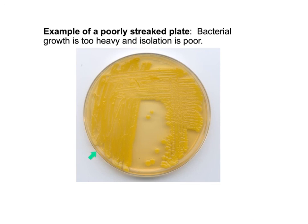This right here would be an example of a poorly streaked plate because the bacteria growth is so heavy that we really don't have any isolation, maybe a little bit here and here, but not a lot of isolation of individual bacterial colonies.